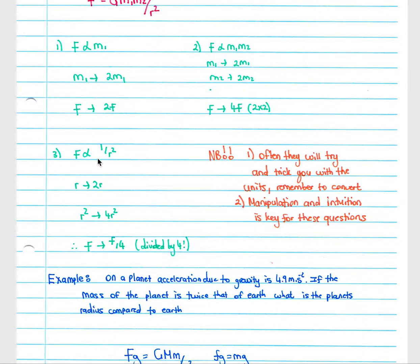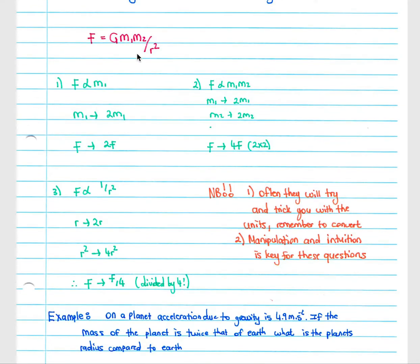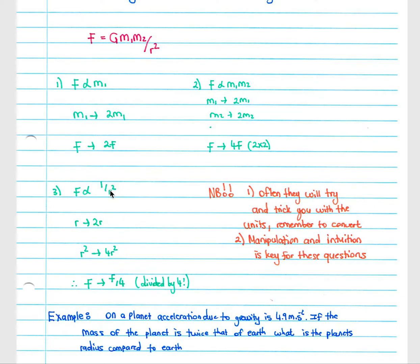Our third derivation is that F is directly proportional to one over r squared. It is not directly proportional to r squared — only directly proportional to one over r squared. If we increase r to two r, then r squared increases to four r squared. Because F is directly proportional to one over r squared, F therefore becomes F over four, because our r squared is now four times what it was. So the force is minimized by a factor of four.